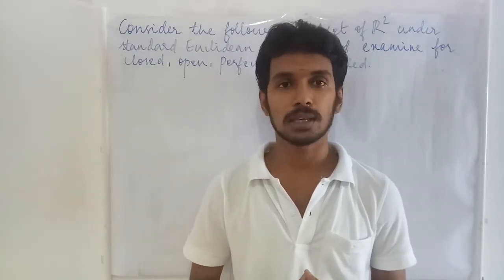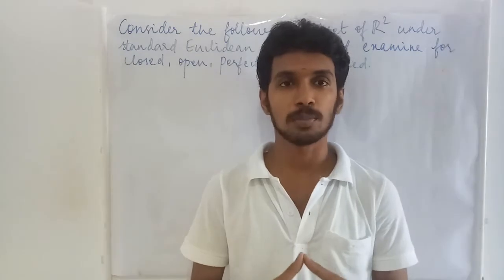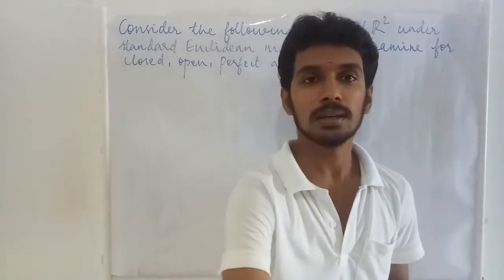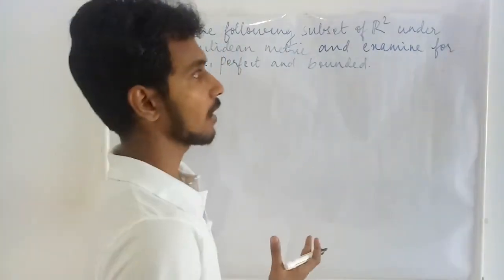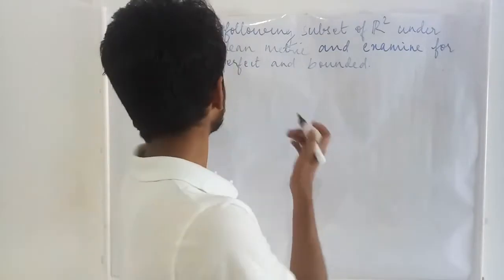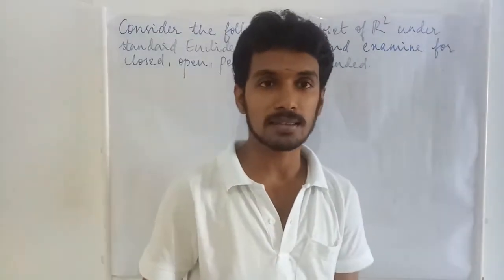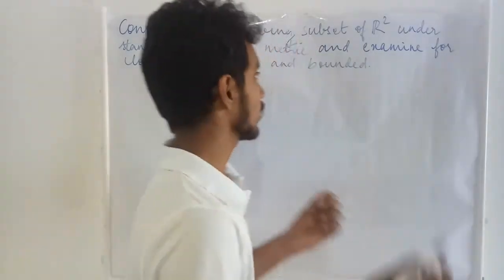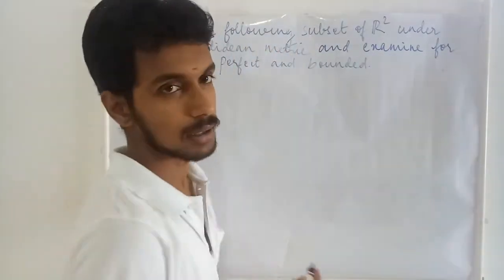In this lecture we are going to see a few examples of open sets, closed sets, bounded and perfect sets in R². The problem we consider is to collect some subsets of R² under the standard Euclidean metric and examine whether the taken sets are closed, open, perfect, or bounded.